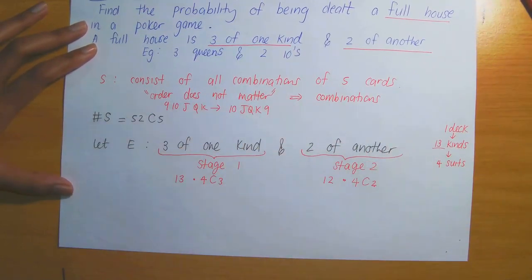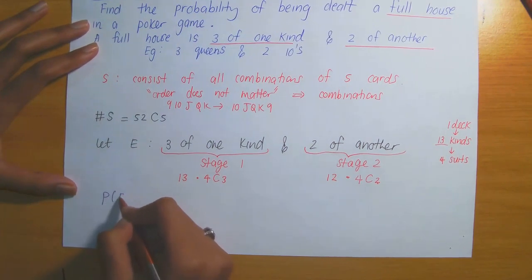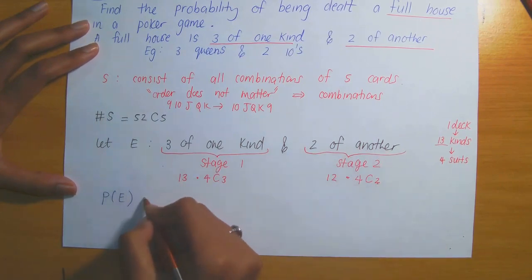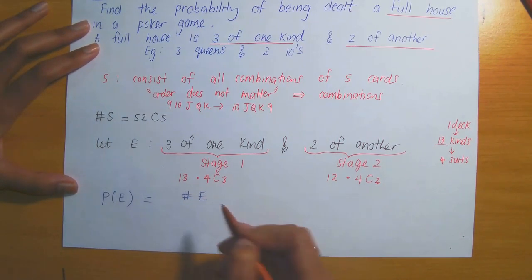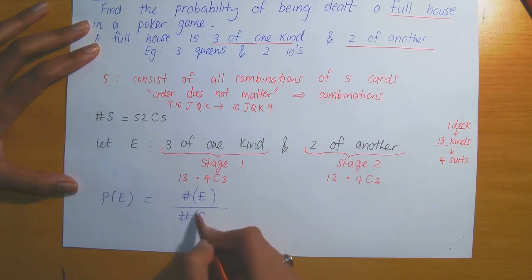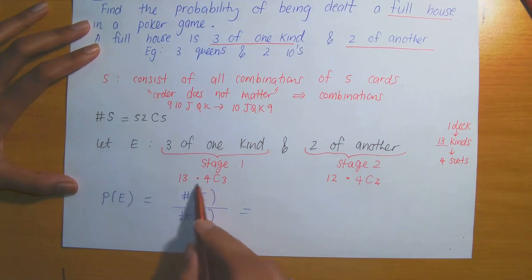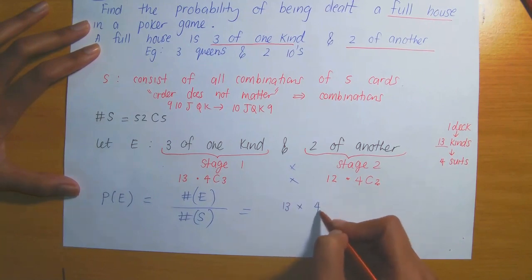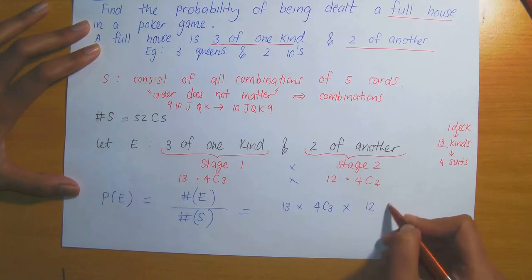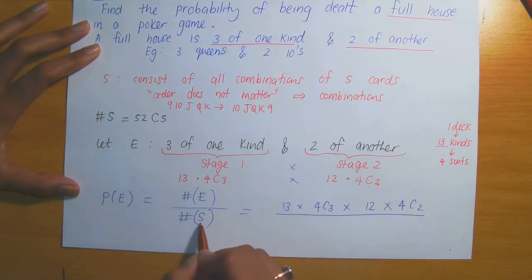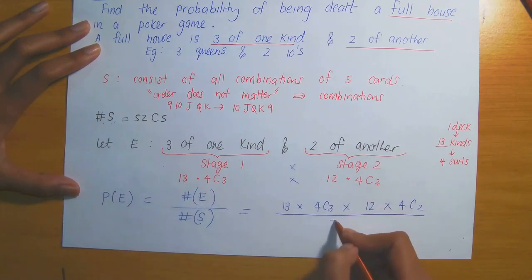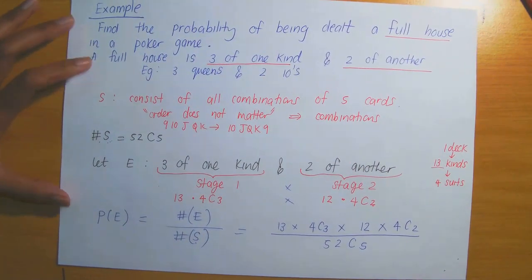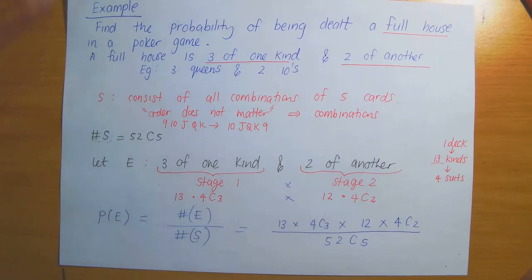Now that we have all outcomes for each stage and the sample space, the probability of event E — being dealt 3 of one kind and 2 of another — equals the number of ways E can occur divided by the total outcomes in S. This is (13 × 4C3 × 12 × 4C2) divided by 52C5. You can evaluate this with a calculator or simplify using the properties of combinations.